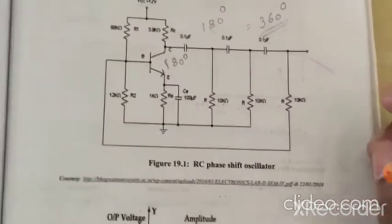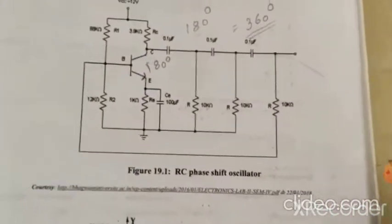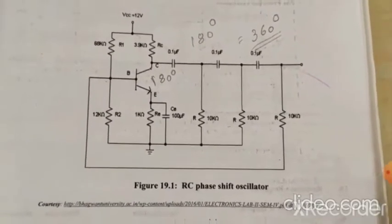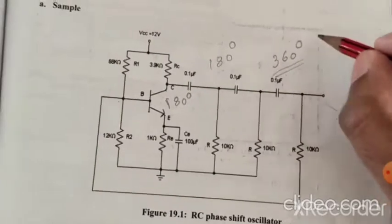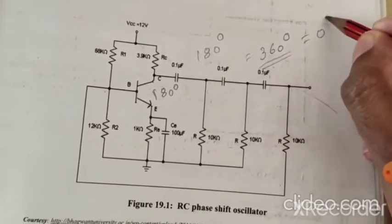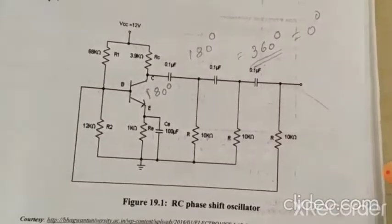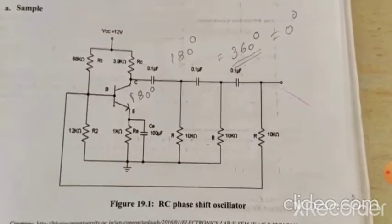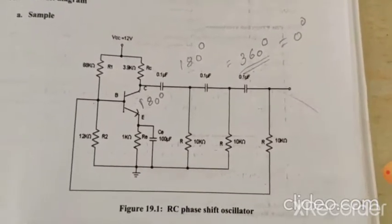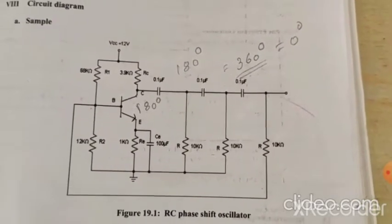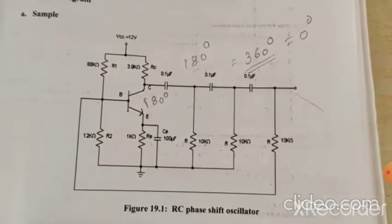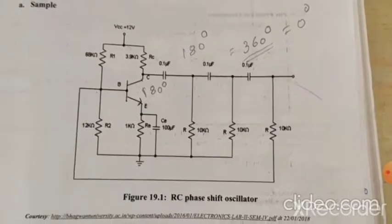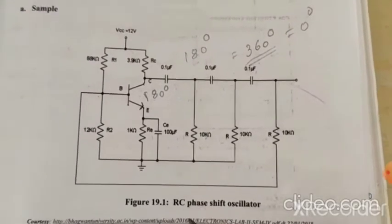We have already studied Barkhausen's criteria for sustained oscillations. When we get 360 degrees of phase shift — which is also equal to zero degrees phase shift between input and output — we get sustained oscillations. The capacitors are 0.1 microfarad each.